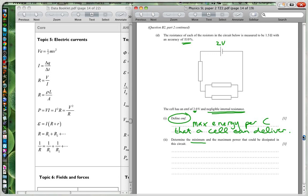So it says determine the minimum and the maximum power that could be dissipated in the circuit. So again, we're looking here at our power formulas. We've got our voltage, which is 2, and our R, which is going to change. So our power is equal to V squared over R.